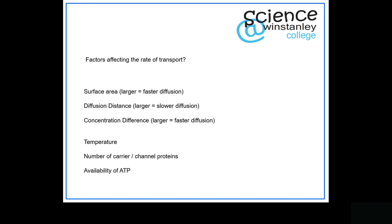First off, surface area. If we look at something like simple diffusion, the bigger the surface — this could be the surface of the cell — the faster the rate of diffusion will occur. That only applies really to non-polar molecules that can move straight through the bilayer all by themselves.